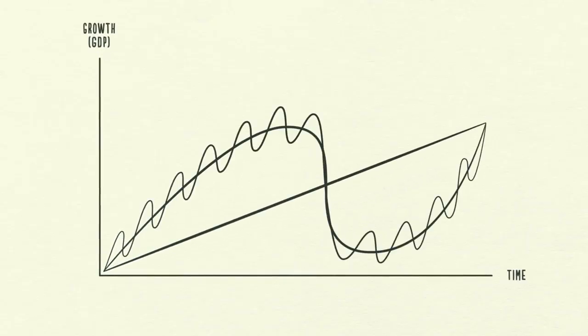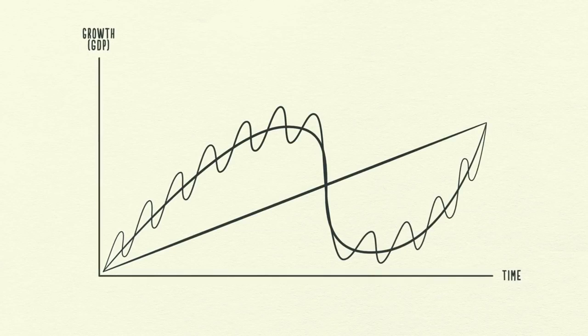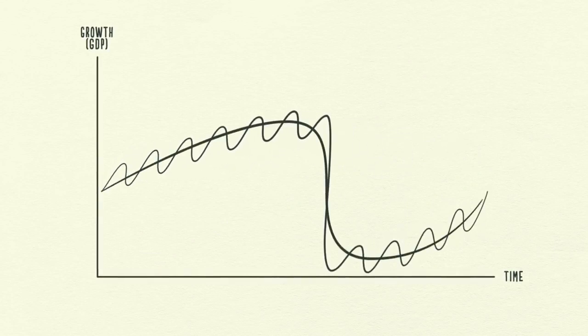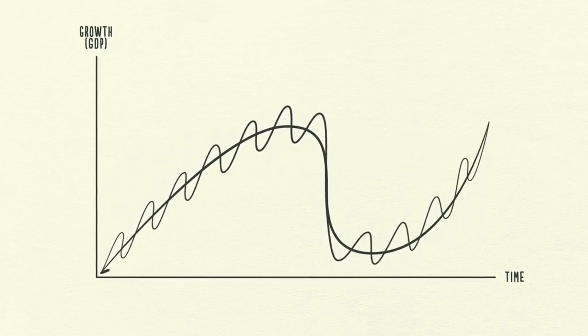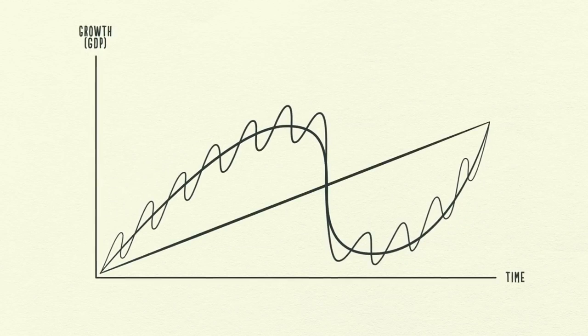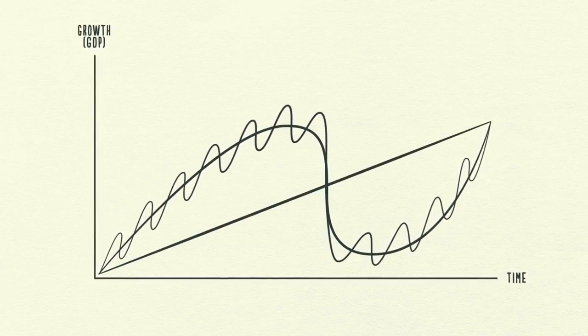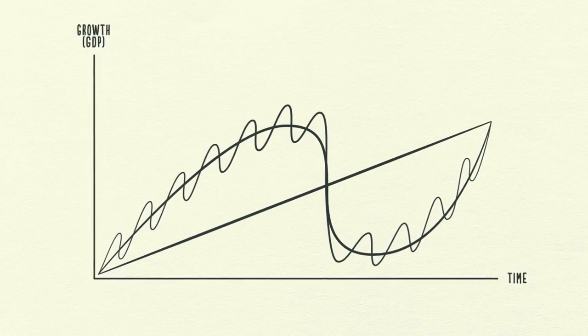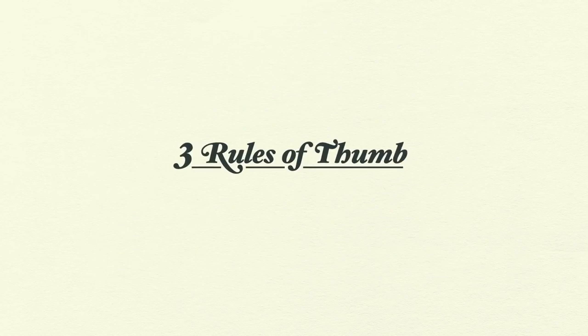In closing, of course, the economy is a little bit more complicated than this template suggests. However, laying the short-term debt cycle on top of the long-term debt cycle and then laying both of them on top of the productivity growth line gives a reasonably good template for seeing where we've been, where we are now, and where we're probably headed. So, in summary, there are three rules of thumb that I'd like you to take away from this.